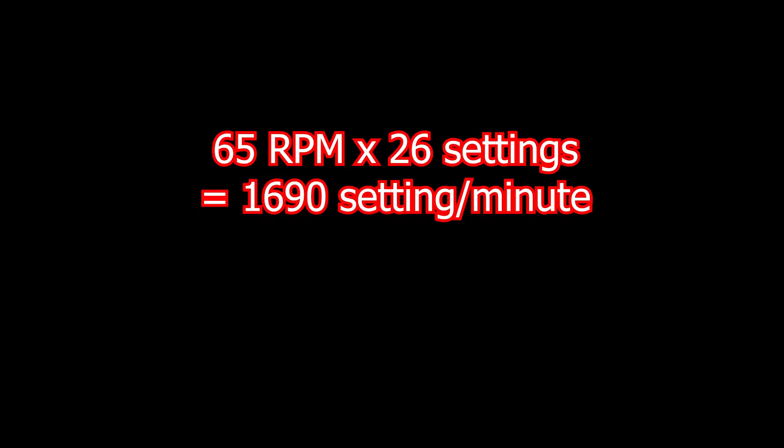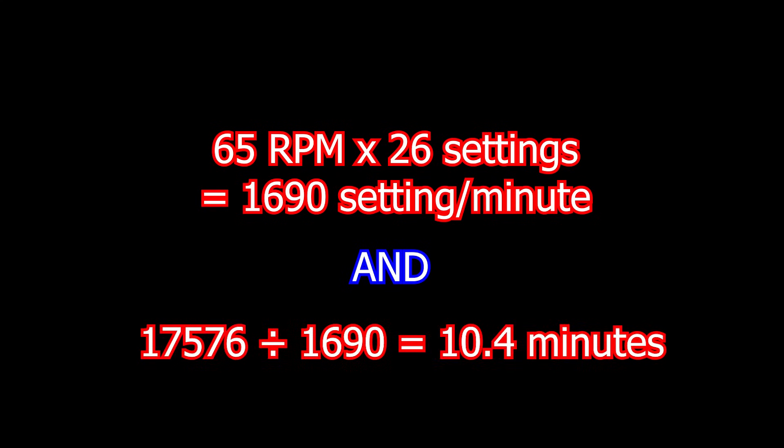In earlier versions of the machine, the top bomb rotors would spin at 65 revolutions per minute, where each revolution tested 26 letters, so about 1690 settings per minute. To go through all 17,576 settings took about 10.4 minutes.